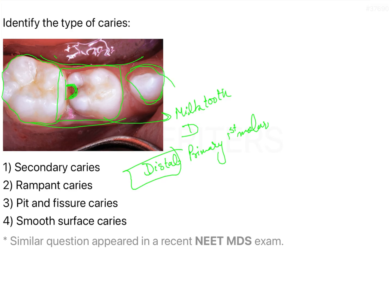Here you can see there is a carious lesion on the proximal surface. Now what are the options? First, secondary caries — secondary caries are generally seen below restorations. If you have already restored the tooth, then only secondary caries will occur. Since there is no restoration here, we can rule out secondary caries.